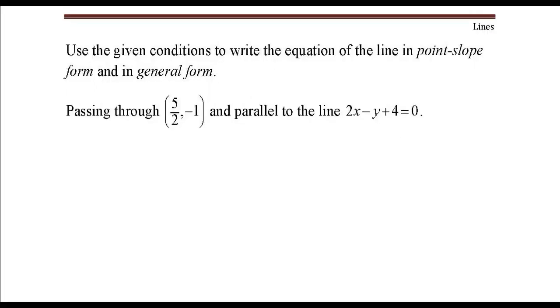So I want to write the equation of the line in both point-slope form and general form. That line will be passing through this point given and parallel to this line given. The first thing I'm going to do is label this point x1 comma y1.